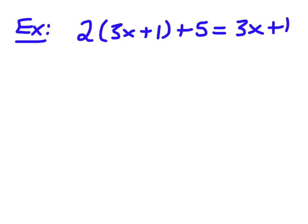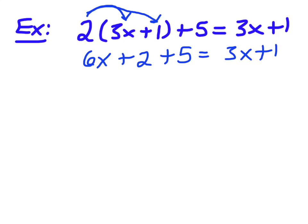So, the reason why this is a little bit more complicated than the last is just because you have this plus 5 hanging out here. So, after you distribute, you have to simplify again on one side. So, let's give it a shot. So, we're going to go with 2 times 3x, 2 times 1.